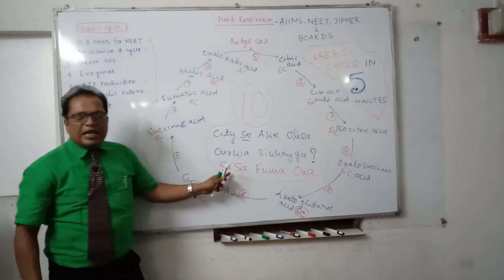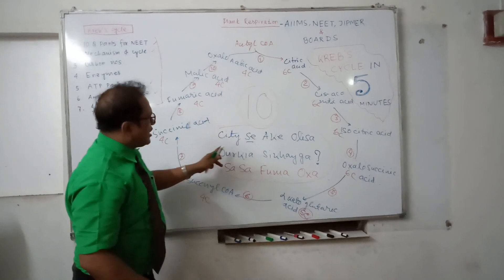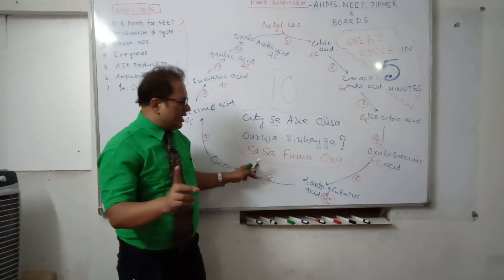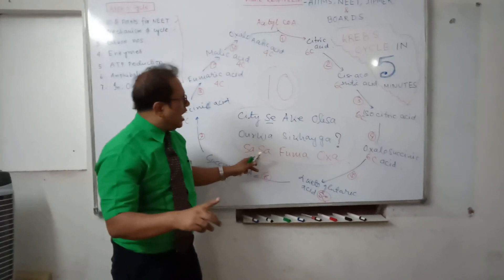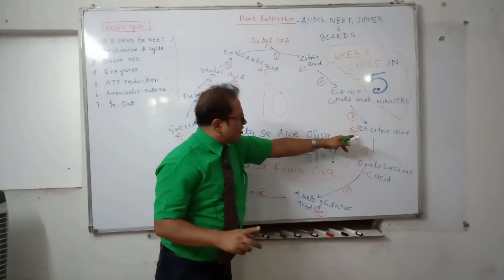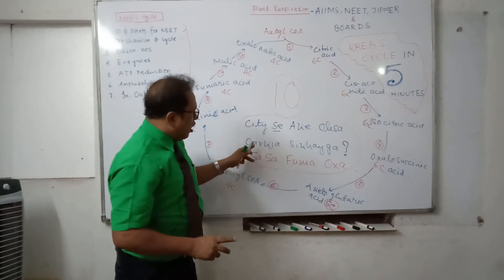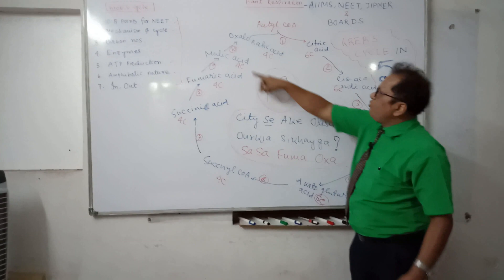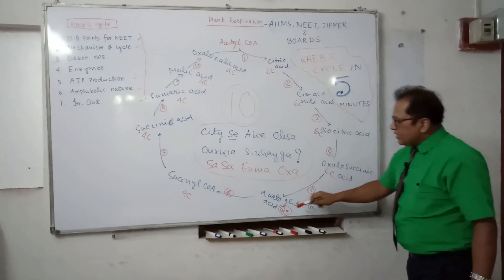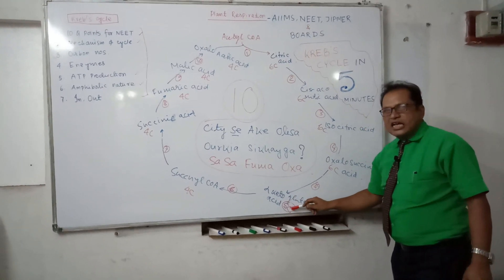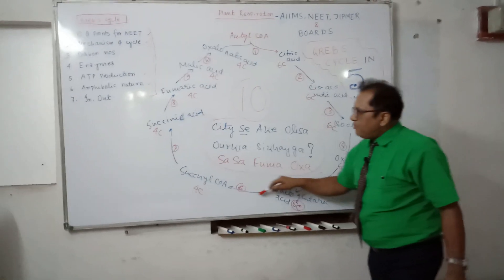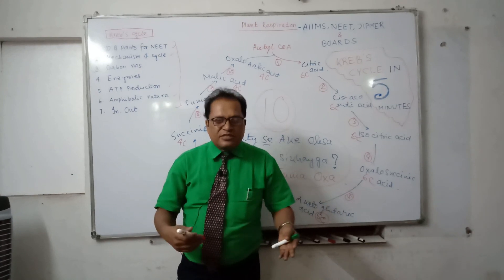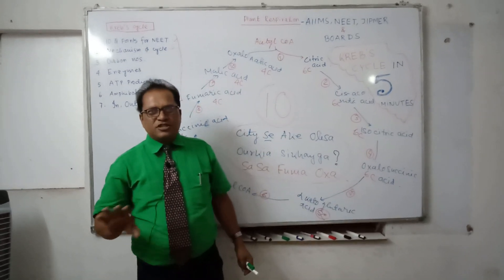Today we have completed two things: the 10 steps of Krebs cycle and the number of carbon atoms at each step. Using the mnemonic 'City se ake, Olisa, aur kya sikhayega? Sasa, fume, ma, auxa' — citric acid, cis-aconitic acid, iso-citric acid, oxalo-succinic acid, alpha-keto-glutaric acid, succinyl coenzyme A, succinic acid, fumaric acid, malic acid, oxalo-acetic acid — and the carbon rule: alpha-keto-glutaric has 5 carbons, before it 6, after it 4. Don't forget to watch the next video on enzyme names!